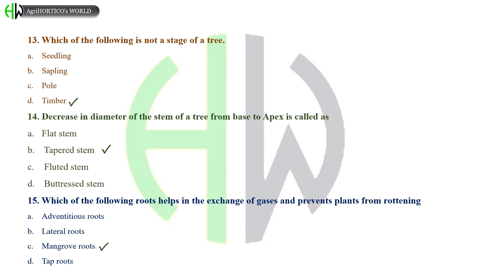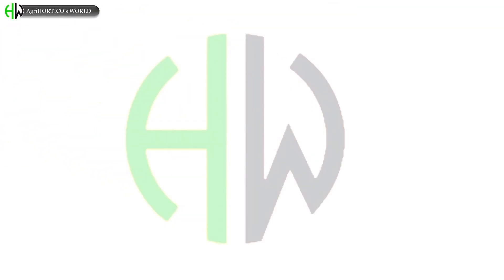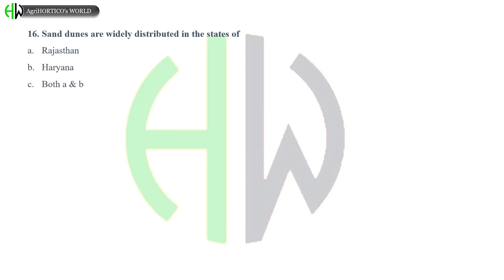Sand dunes are widely distributed in the states of: Rajasthan, Haryana, Both A and B, or Uttarakhand? And the correct answer is both Rajasthan and Haryana.